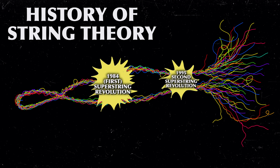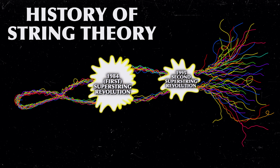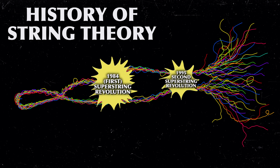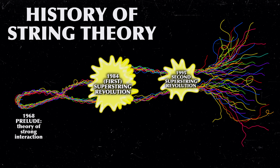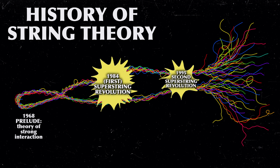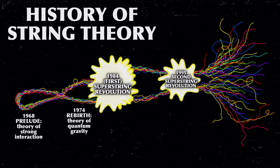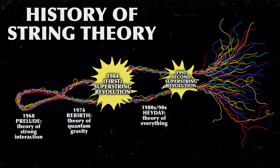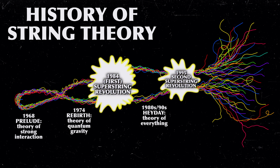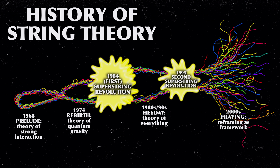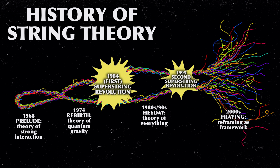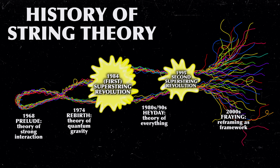To guide us through this adventure without getting lost, I have created a timeline of string theory, which will take us from humble beginnings as a theory of the strong interaction, to quantum gravity, to a hopeful theory of everything, to fraying into an overarching mathematical toolkit — where we kind of are today.